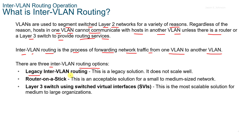You have Legacy Routing — this is a legacy solution and it does not scale well. You have Router on a Stick, which is an acceptable solution for a small to medium sized network. And then you have the Layer 3 Switch using Switched Virtual Interfaces or SVIs, which is the most scalable solution for medium to large companies.